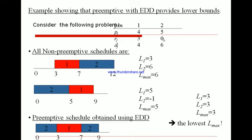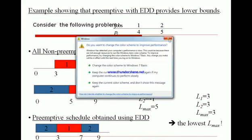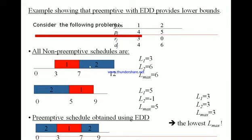This is one way to do things. The other way is to start Job 2. Since we're not allowed to interrupt the job in non-preemptive scheduling, we finish Job 2 completely, then start Job 1.